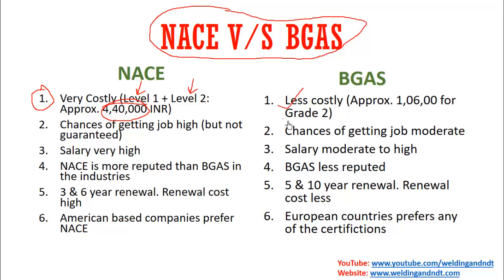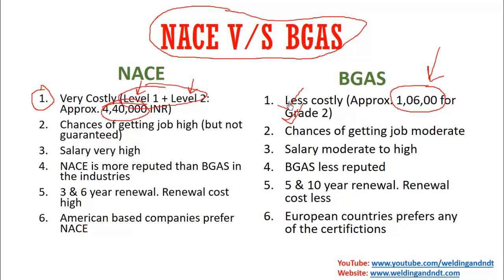BGAS is less costly compared to NACE. For BGAS Grade 2, you need to pay only 1,06,000 rupees — this is the concessional fee after COVID-19, reduced by TWI from the earlier 1,33,000. In BGAS, only Grade 2 is enough for industry work. There are two grades in BGAS — Grade 2 is the starting grade and Grade 1 is the senior-most — and Grade 2 alone is sufficient.